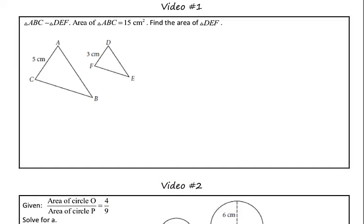So taking a look at this first problem, we are told that triangle ABC is similar to triangle DEF. We're also told that the area of triangle ABC is 15 centimeters squared.